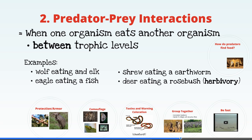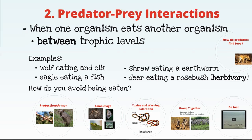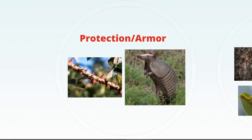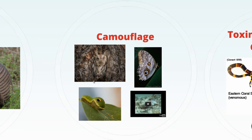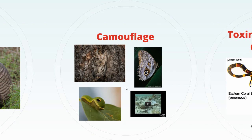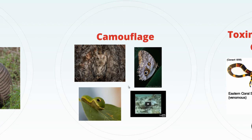Prey species have evolved adaptations to avoid being eaten. Protection and armor: this rose has sharp thorns, and this armadillo has a hard outer shell. Camouflage is another way to avoid being seen — this owl blends in with bark. Camouflage can also mean looking like something you're not. Both of these species exhibit eye spots, meant to look like the eye of something much bigger. When a bird tries to eat the moth, it opens its lower wing and the sudden appearance creates a startle response, giving the moth a head start.